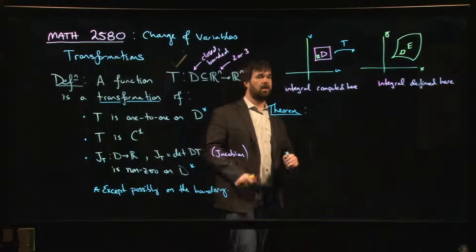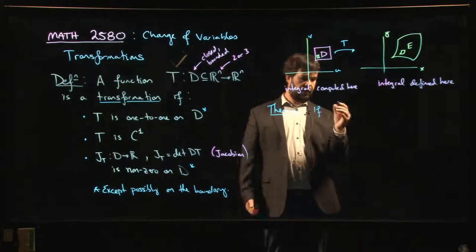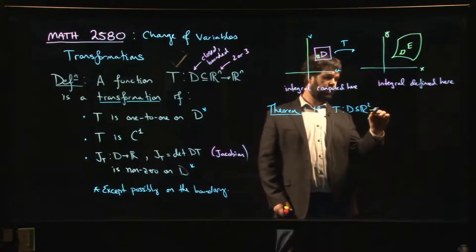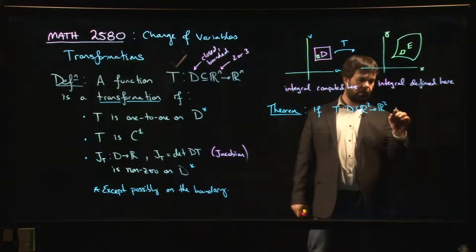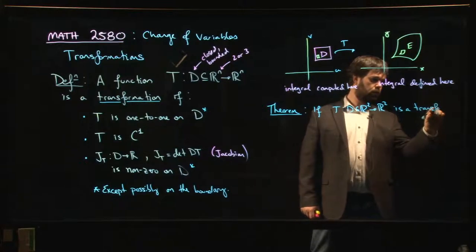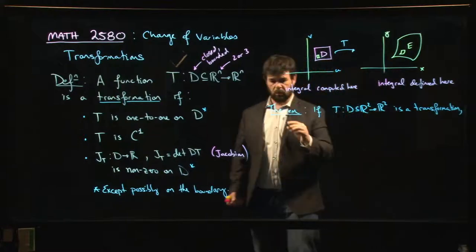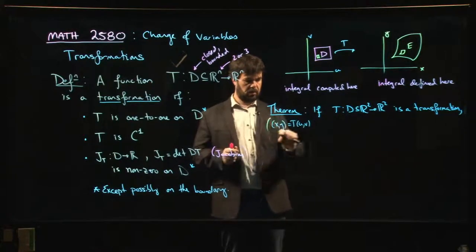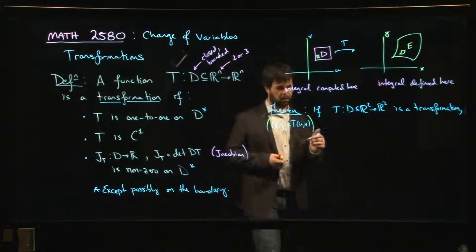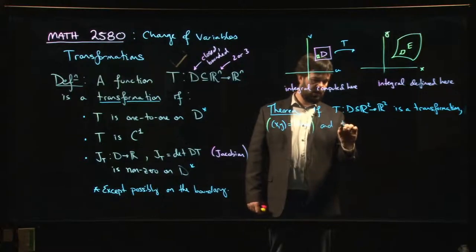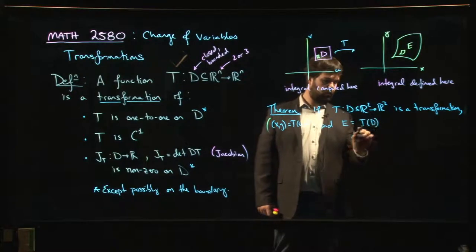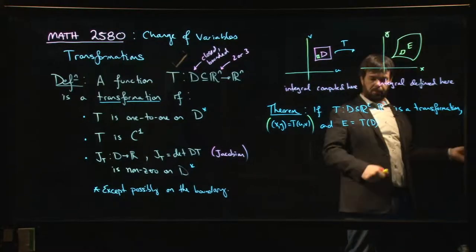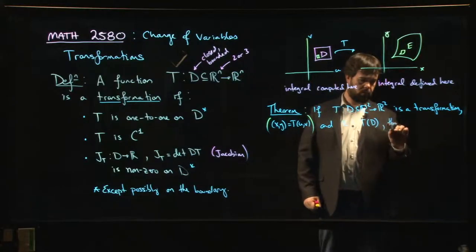And it looks something like this. It will say, well, if, you know, if T is a transformation, so if T going from D in, well, let's just do R² just so I can simplify things. You can do this for R³ as well. If this is a transformation, right? And so we're going to give it by xy is equal to T of uv. This is kind of what we want to think about here. And if E is the range of that transformation, so E is the image of D under the transformation. So E is the set of all points that you obtain by taking a point in D, plugging it into T, and seeing where you end up over here.